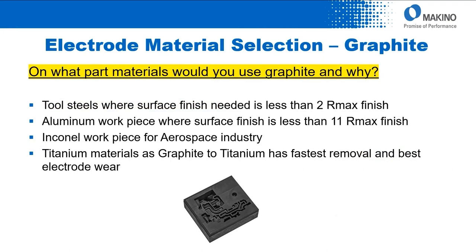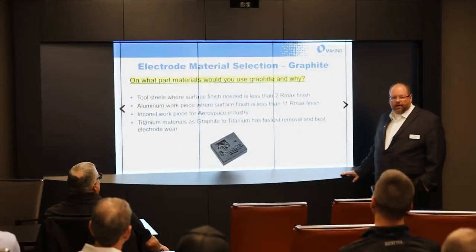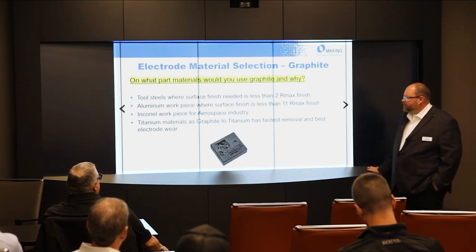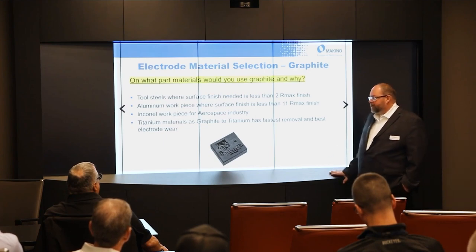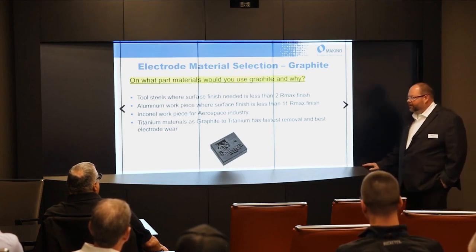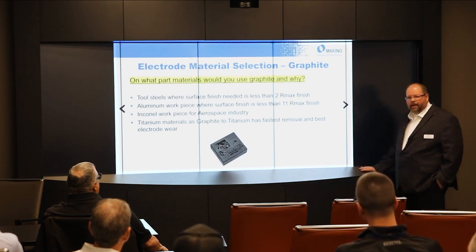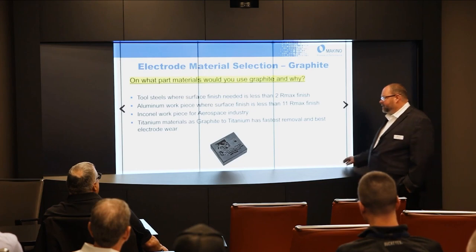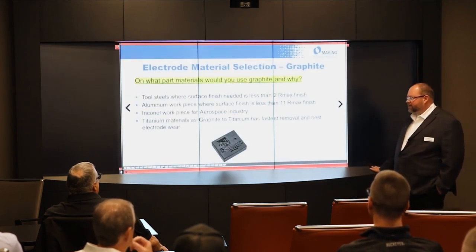Where are we going to use graphite? Tool steels where we need a finish of less than 2R max — if we need better than 2R max, copper is the alternative. For aluminum, the best we can do in graphite is 11R max finish, where copper can get down to about 6R max. Graphite is the standard for aerospace, and copper-impregnated graphite also works well for aerospace industry materials. For titanium, graphite really is your only electrode.